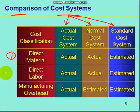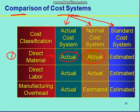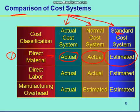The first factor is direct material. In the actual cost system, the actual material cost is taken into consideration. In the normal cost system, we also take the actual cost into consideration. But in the standard cost system, we take the estimated value of the direct material. This is the key difference as far as direct material is concerned.